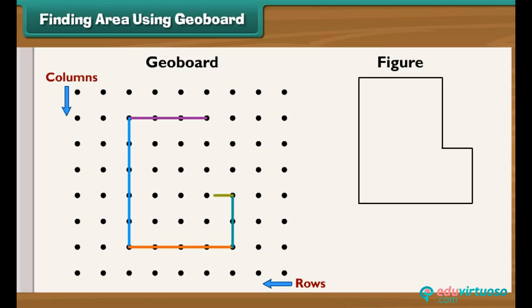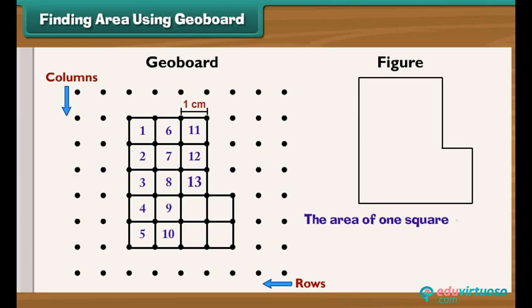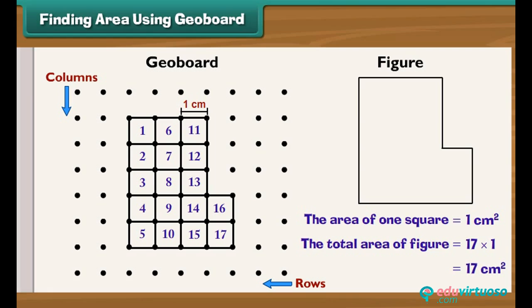First, draw five lines of lengths five centimeters, four centimeters, two centimeters, one centimeter, and one centimeter on paper as shown in the figure. The distance between any two adjacent dots in the geoboard is one centimeter. Join the dots to create a closed figure. Then join all the dots inside the figure horizontally and vertically to form square blocks. Count all the square blocks. The area of each square block is one centimeter square. The area of the complete figure equals the number of square blocks multiplied by the area of one square block — that is, 17 into one, which equals 17 centimeters square.